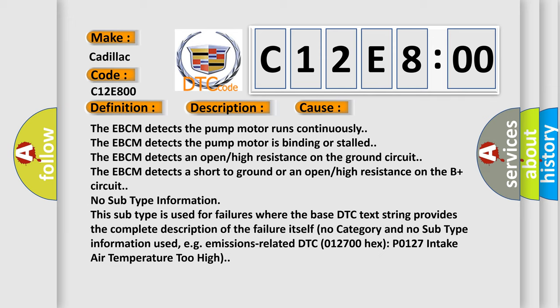No subtype information. This subtype is used for failures where the base DTC text string provides the complete description of the failure itself. No category and no subtype information used, e.g., emissions-related DTC 012700 HEX P0127 intake air temperature too high.